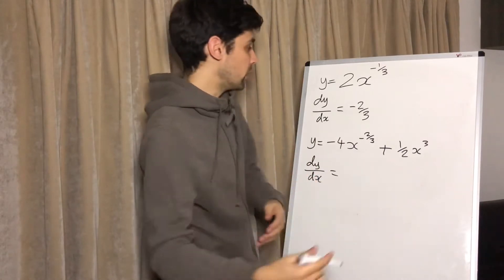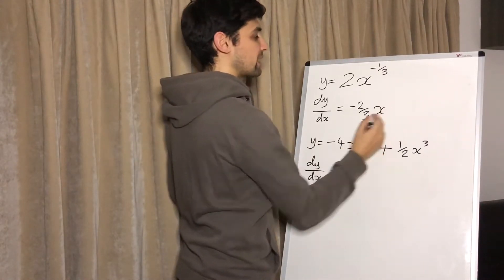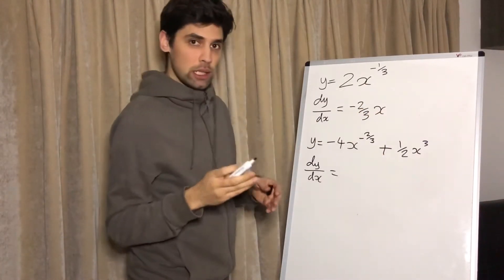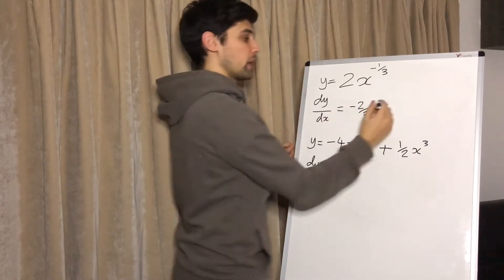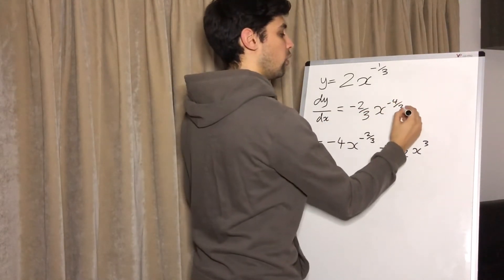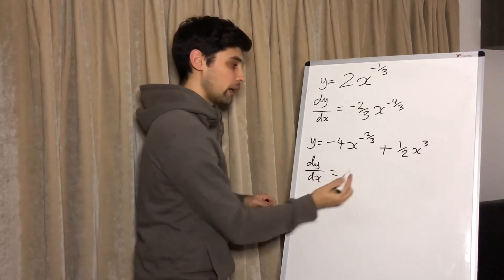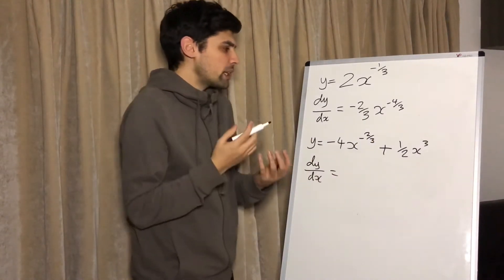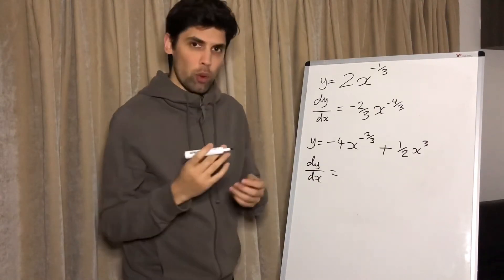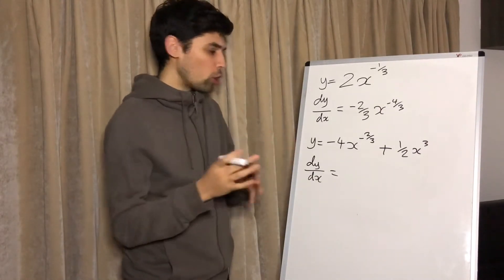Then X. Now we minus one from the power. Minus a third minus one becomes minus four thirds. That's it. Same rules apply here. Bring the power down in front. Now people get a little bit confused or stuck when dealing with multiplying fractions by whole numbers, but there's really no need to.